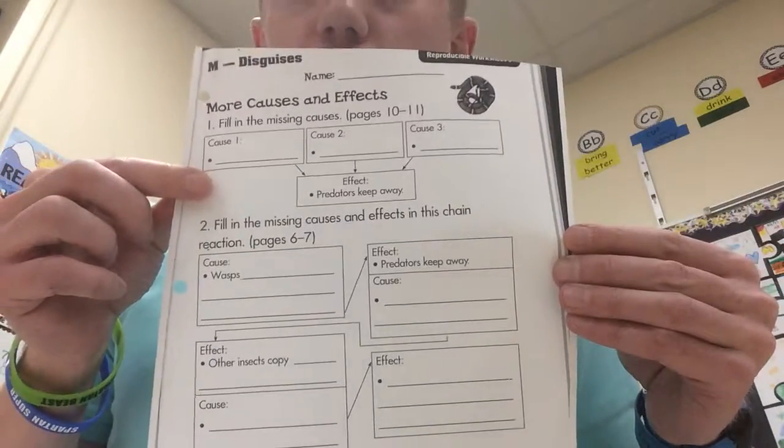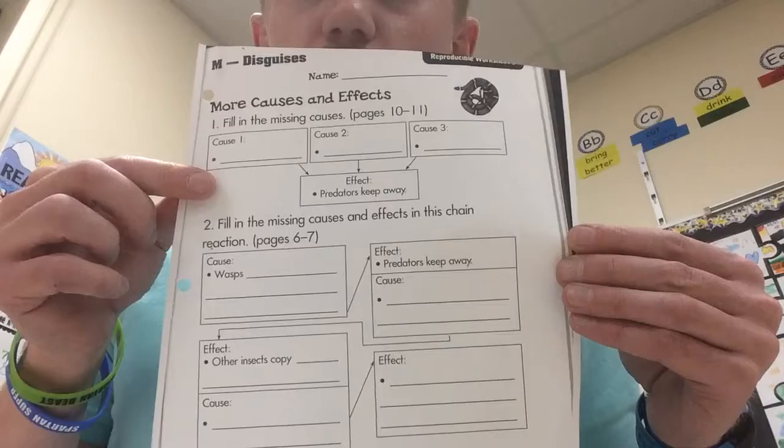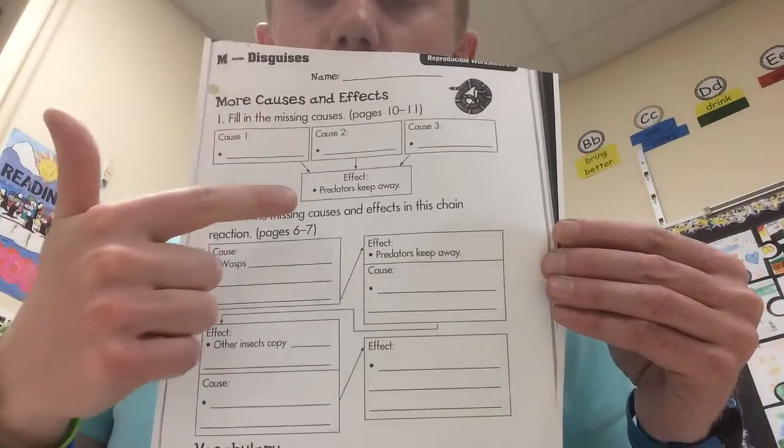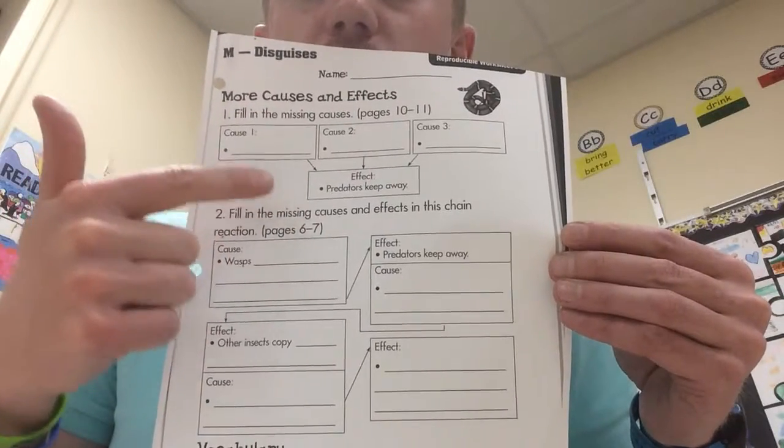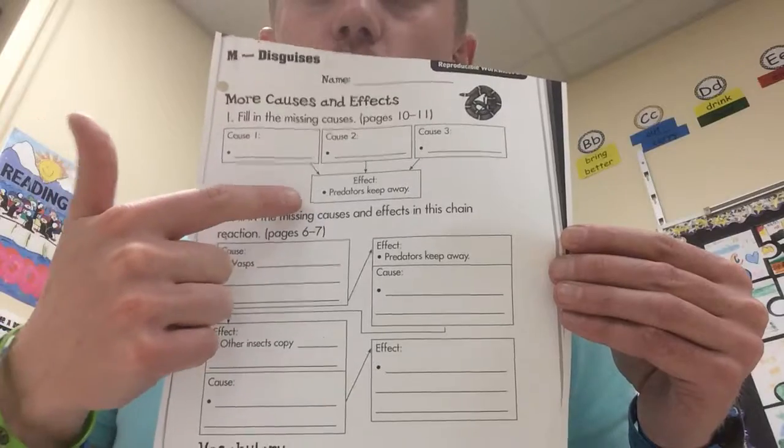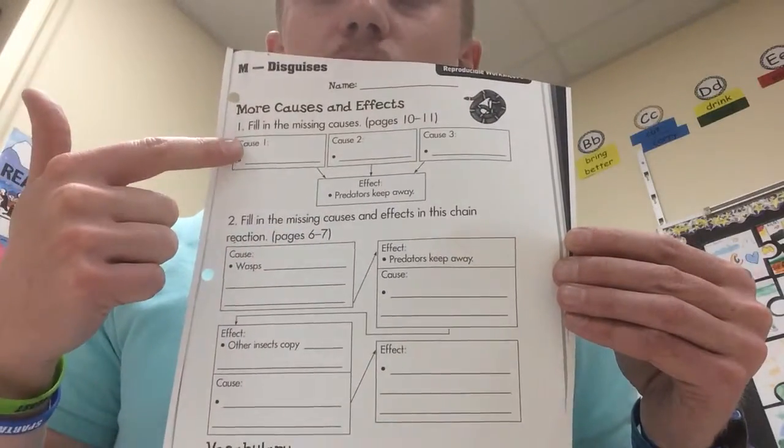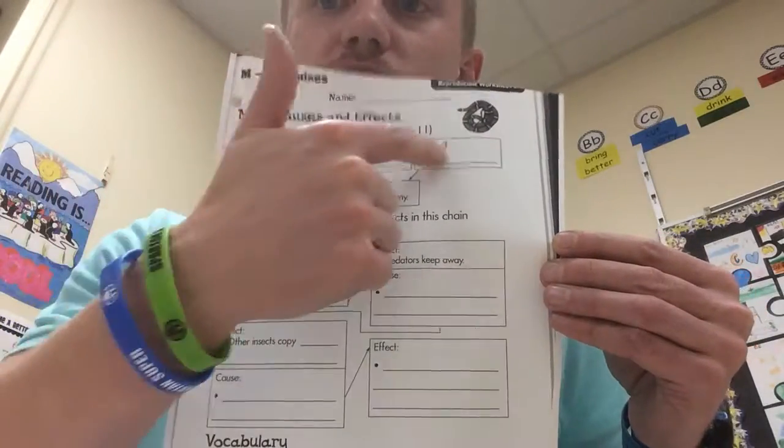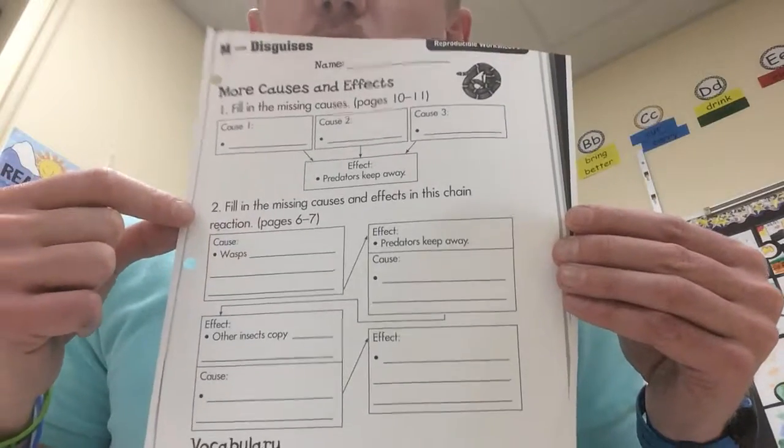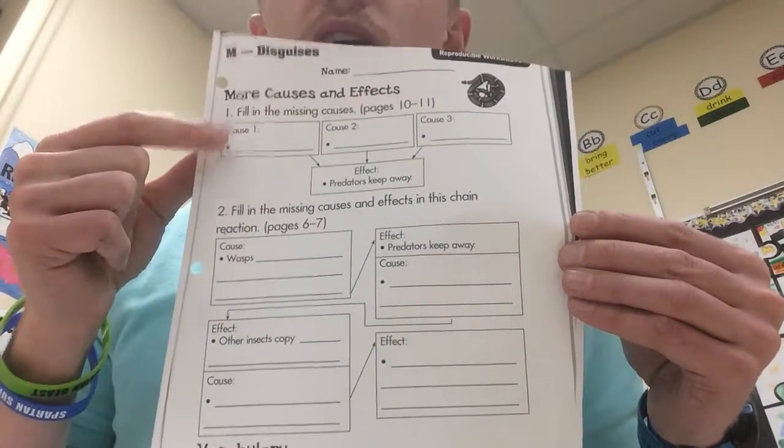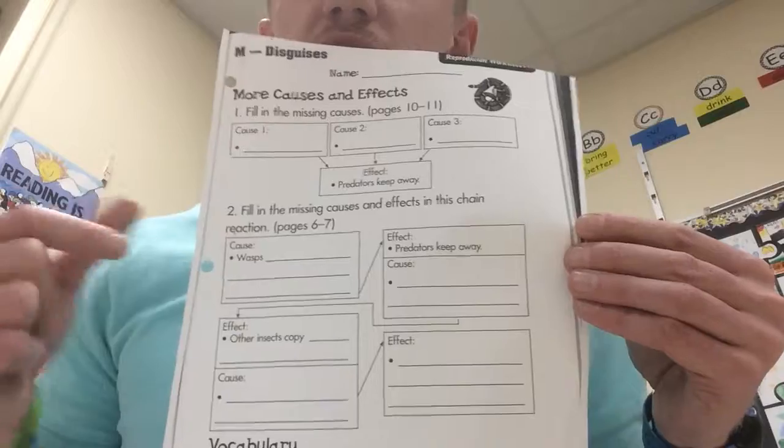For the top part up here, fill in the missing causes. It gives you the pages, but one effect, what happens? Predators keep away. Why does that happen? There are three different reasons for why predators could keep away. You need to find those three different causes that have the same effect.